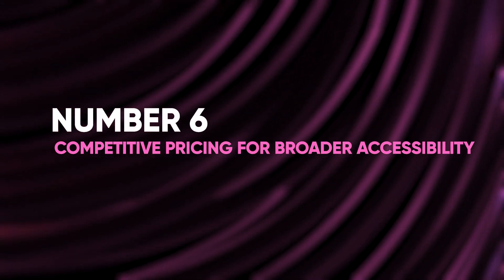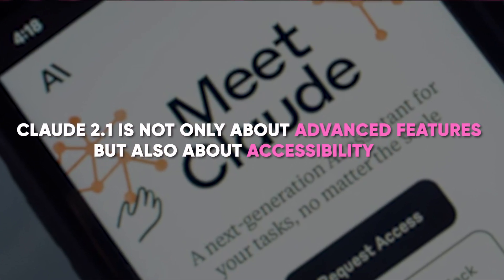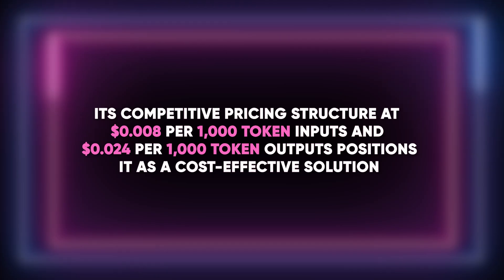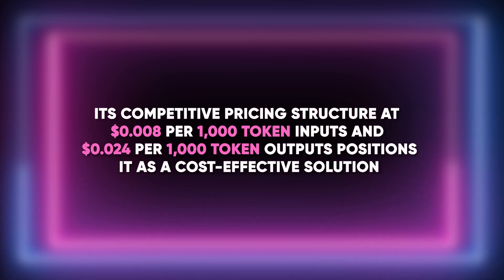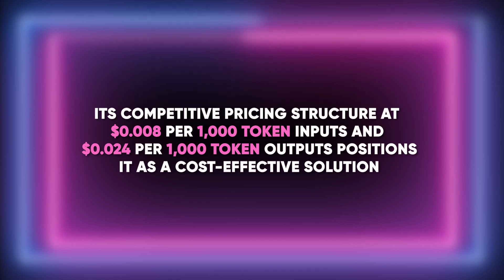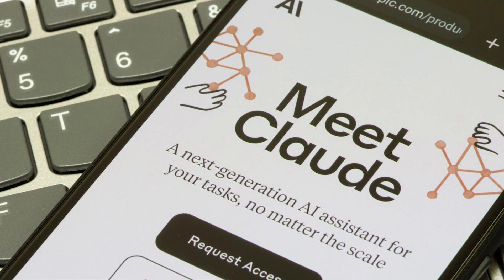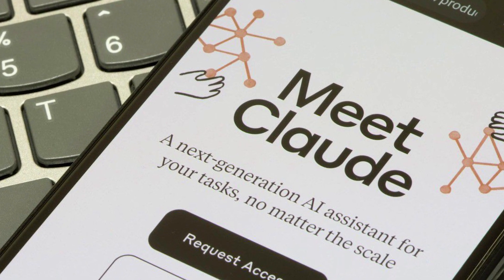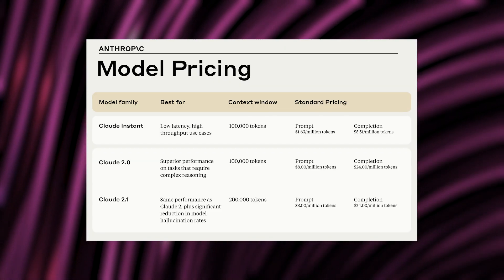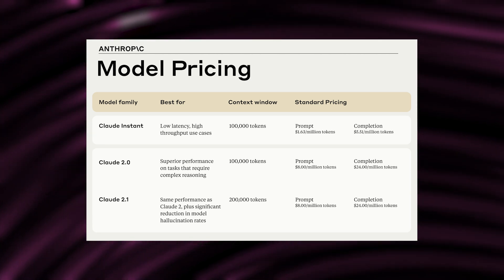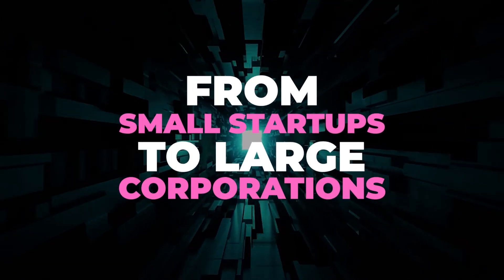6. Competitive pricing for broader accessibility. Claude 2.1 is not only about advanced features, but also about accessibility. Its competitive pricing structure at $0.008 per 1,000 token inputs and $0.024 per 1,000 token outputs positions it as a cost-effective solution. It's worth noting that this is exclusive to Claude 2.1, which is available for $20 per month. This pricing model democratizes access to advanced AI technology, making it affordable for a broader range of users and industries, from small startups to large corporations.